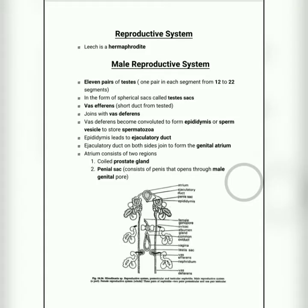Hello students, today we will be seeing the reproductive system of leech. This is the last organ system we are going to see in the leech part. We will also see the parasitic adaptations of leech, which is a repeated question. Leech is a hermaphrodite, meaning it has both male and female reproductive organs in the same body.